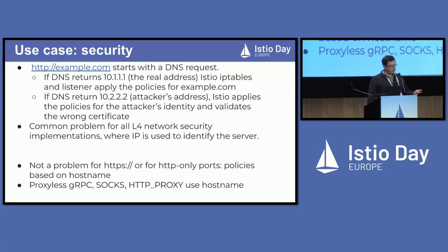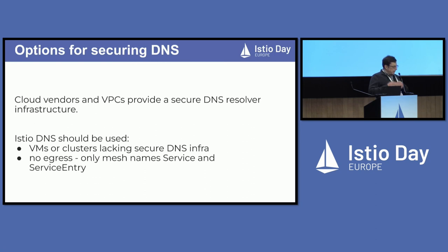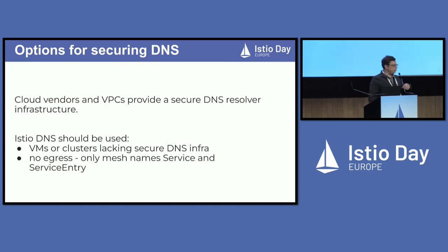Again, nothing new, nothing unique — this has been known since the 90s, but it's important to always make sure you have a secure DNS infrastructure. It is not a problem for HTTP/HTTPS because the host header is used to decide what certificate to validate. And it's not a problem for proxy-less gRPC, SOCKS, or HTTP proxy, which do not use IP at all — they use FQDNs. Almost everyone has a secure DNS infrastructure in the cloud, so it's not something to be scared about. Istio DNS was introduced for users who have their own setup on Raspberry Pis or Android, kind of off-prem, where they lack a secure DNS infrastructure — in which case it's very useful to either enable Istio DNS or get a secure DNS resolver.